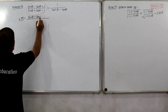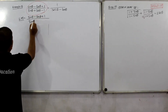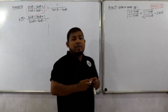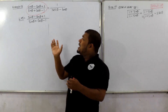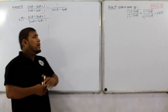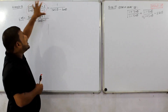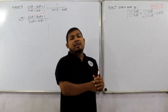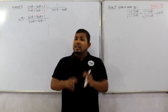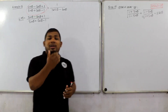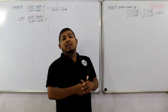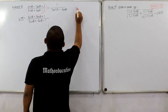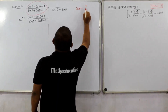We take the left-hand side: sin theta plus 1 divided by sin theta plus cos theta minus 1. To write on the left-hand side, we begin working through the equation. We can express sec theta as 1 divided by cos theta.